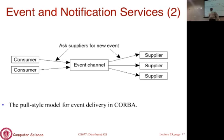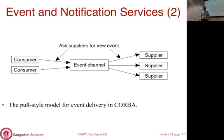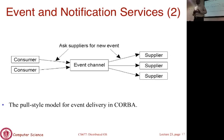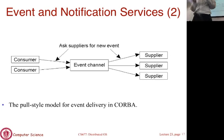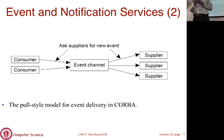This slide shows a push-based pub-sub application where suppliers push events to the event channel, which is a buffer. When events arrive, it matches them against subscriptions and pushes data to consumers. The next slide shows a pull-based model where the event channel pulls from producers periodically, buffers the events, and consumers also pull from the channel. You can also mix and match — push from suppliers and pull from consumers.